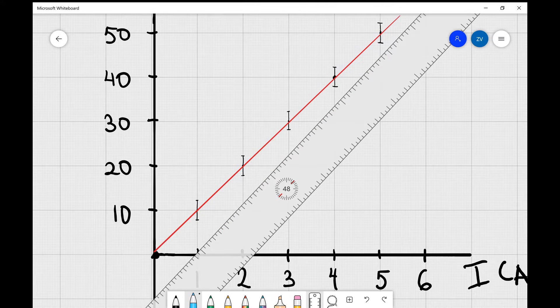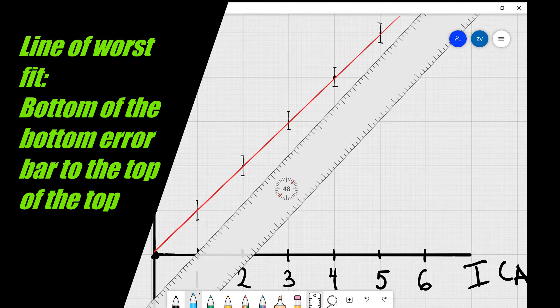Right folks, now that we have the line of best fit, what we'll need to do is draw the line of worst acceptable fit. Now, the rule that I always use is that I start off my line of worst fit at the bottom of the bottom error bar, and I go to the top of the top error bar.